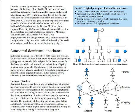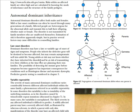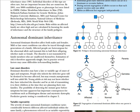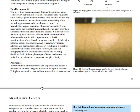Starting with autosomal dominant inheritance: you need to know that it exists in both males and females in the same proportion. There is also late onset disorder, meaning certain autosomal dominant disorders may occur late in life. So in childhood, you may not be able to say the patient has the disease until they reach a certain age.